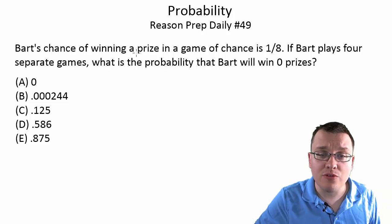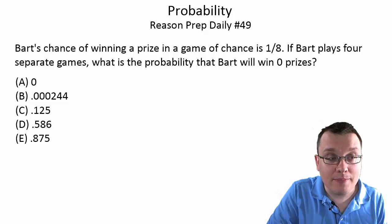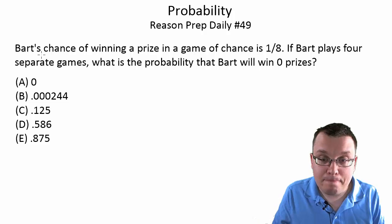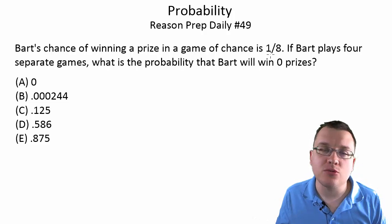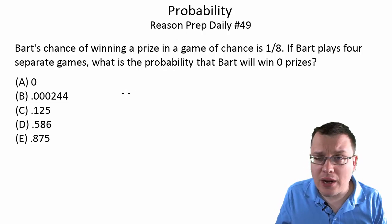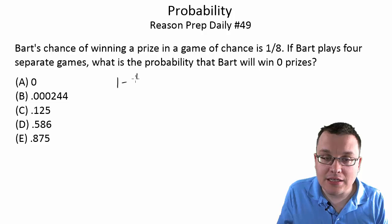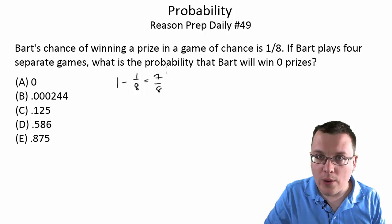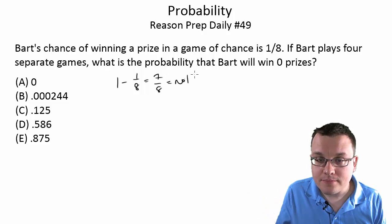What you need to remember is how you would solve a question like this if we want to know zero prizes. First things first, they're separate games, so we can treat the games as independent. So looking at just any one game, if his chance of winning a prize is one out of eight, then his chance of winning no prize in that game would be one minus one over eight, or seven eighths. All the other probability is left for when he doesn't win, so the chances of not winning are seven out of eight.